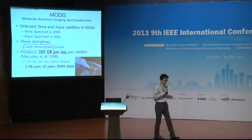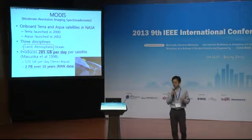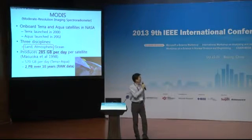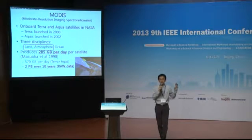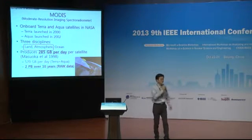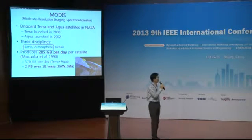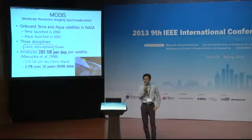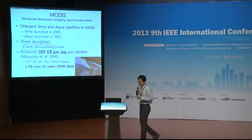To apply the diagnostic model at global scale, the only way is remote sensing data. One key dataset is MODIS, onboard Terra and Aqua satellites from NASA. Terra was launched in 2000 and Aqua in 2002. MODIS has three disciplines: land, atmosphere, and ocean. I am using the land and atmosphere products. It produces 285 gigabytes per day per satellite, so Terra and Aqua together give 570 gigabytes per day — roughly 2 petabytes over 10 years. This is big data, data-intensive science.